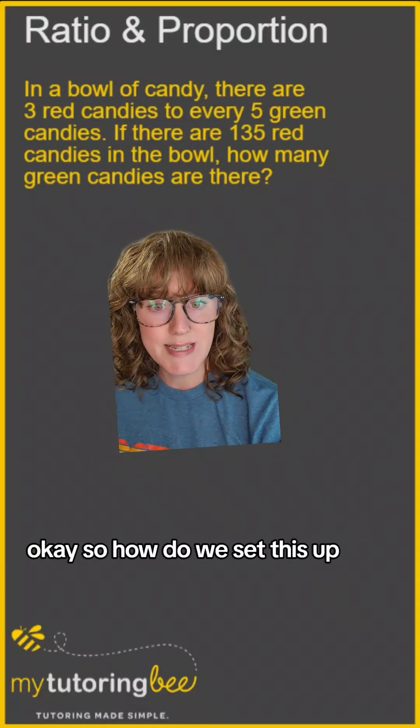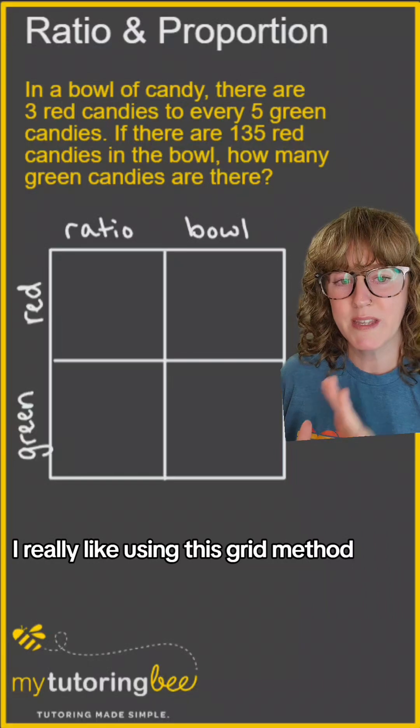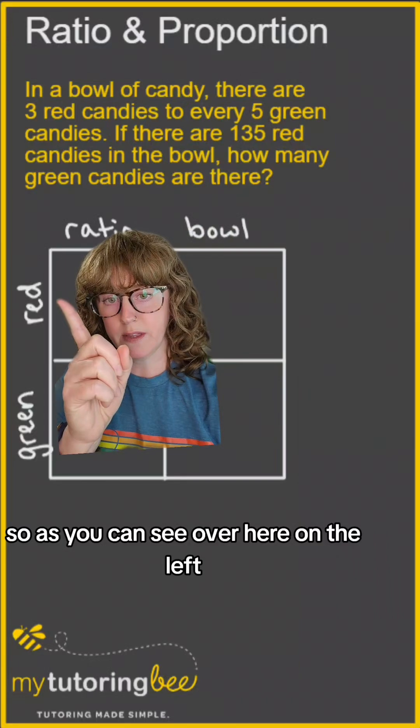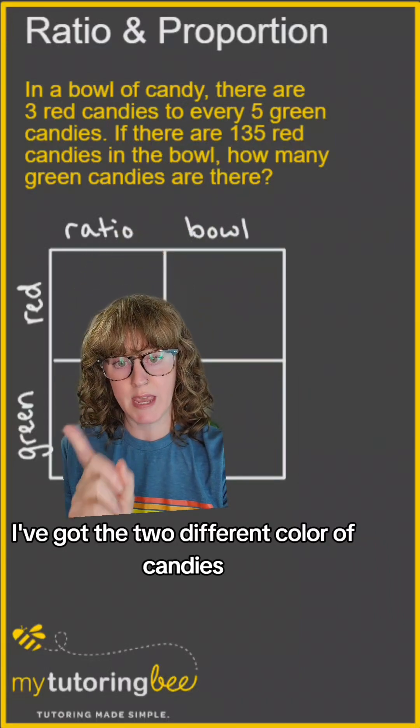Okay, so how do we set this up? I really like using this grid method. As you can see over here on the left, I've got the two different colors of candies, red and green,